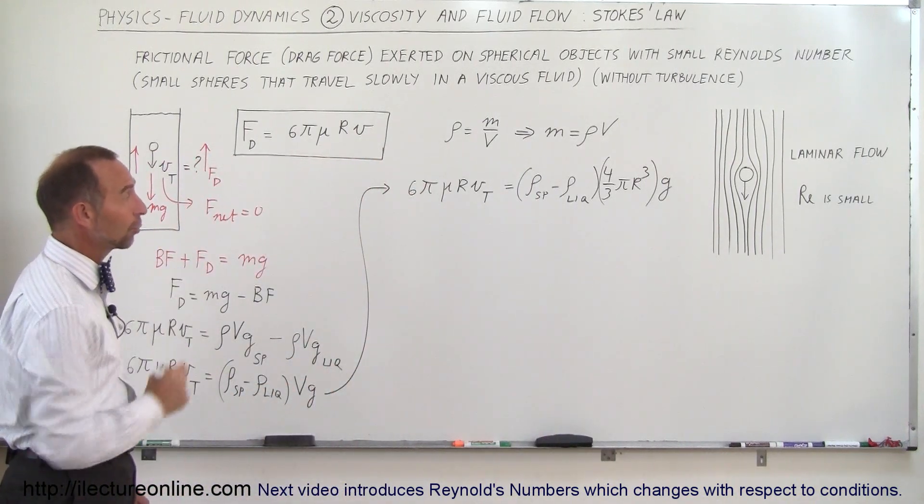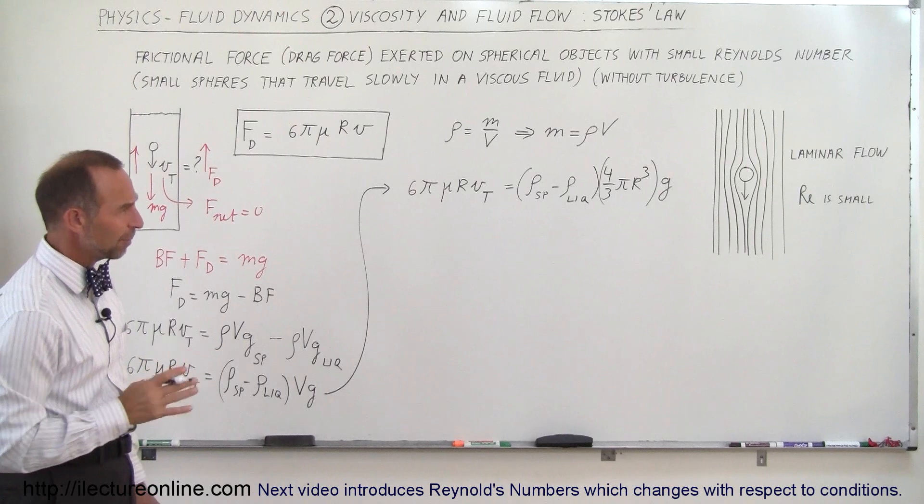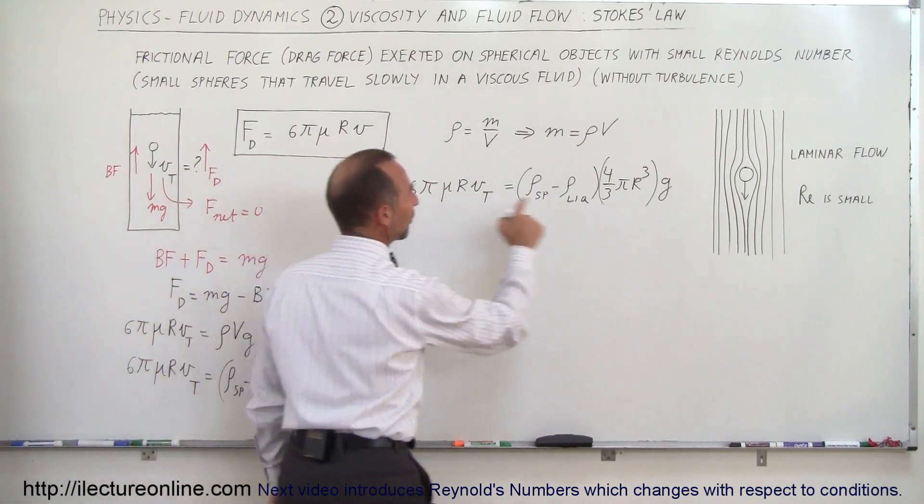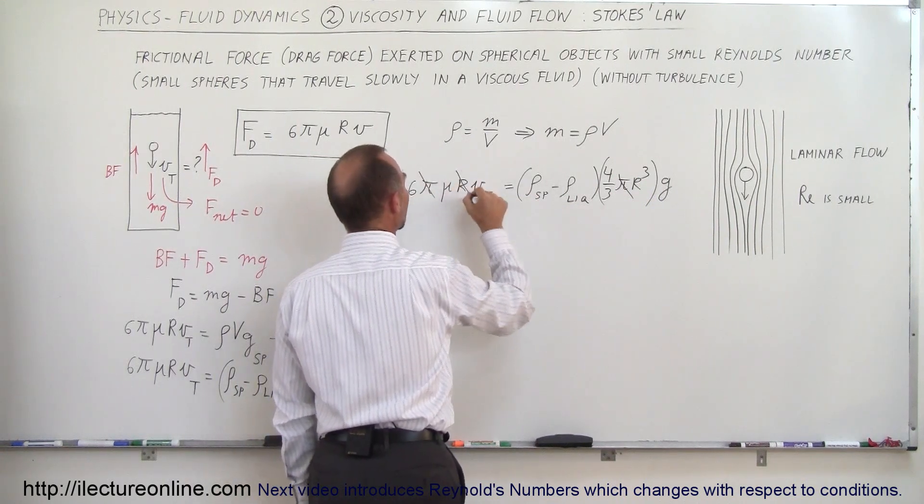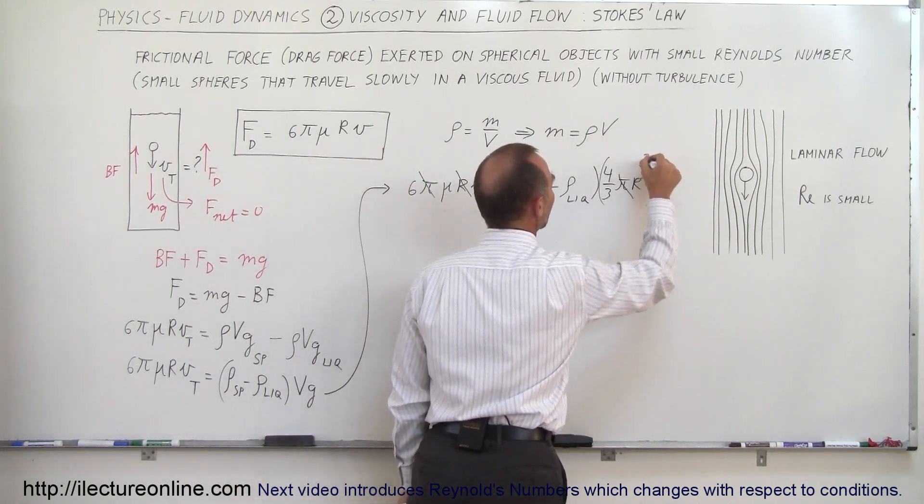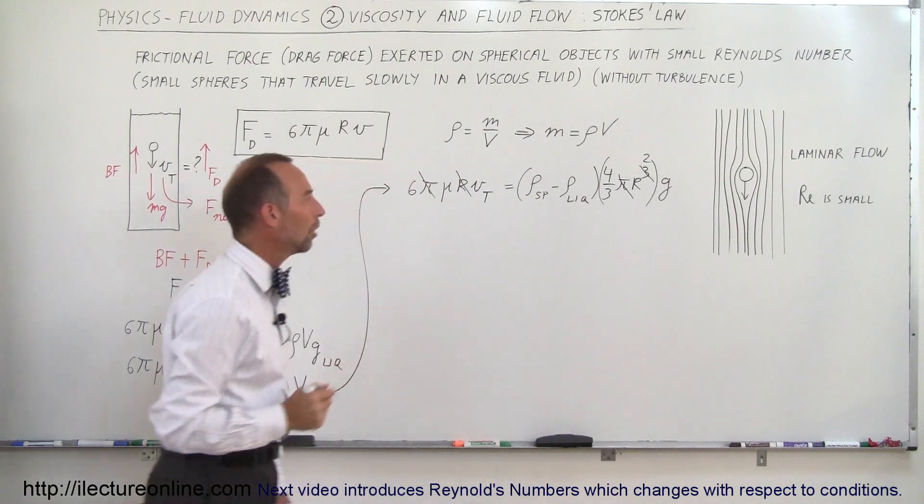All right, now we should be able to solve that equation for terminal velocity. We could probably simplify a few things. Notice that we have a π on the left side, we have a π on the right side, that cancels out. We have the radius of the sphere here and we have three of them there, so that changes from r³ to r².